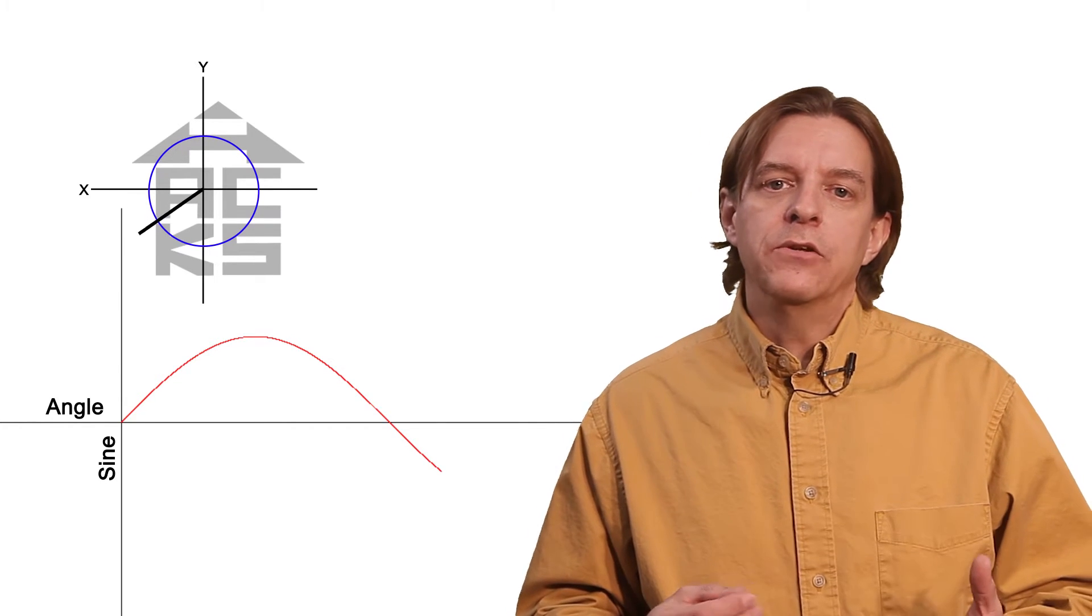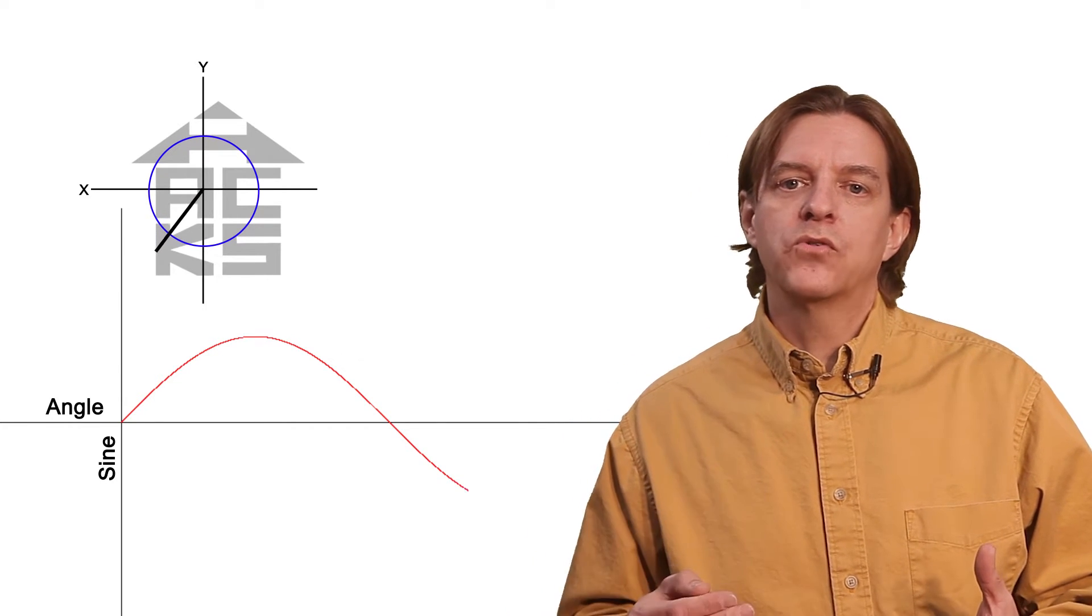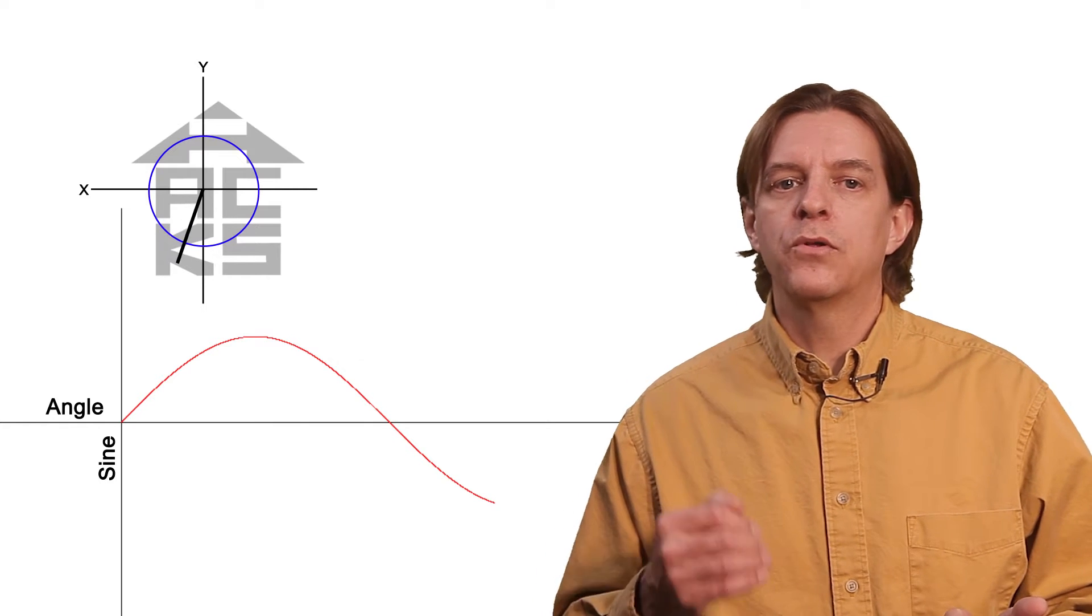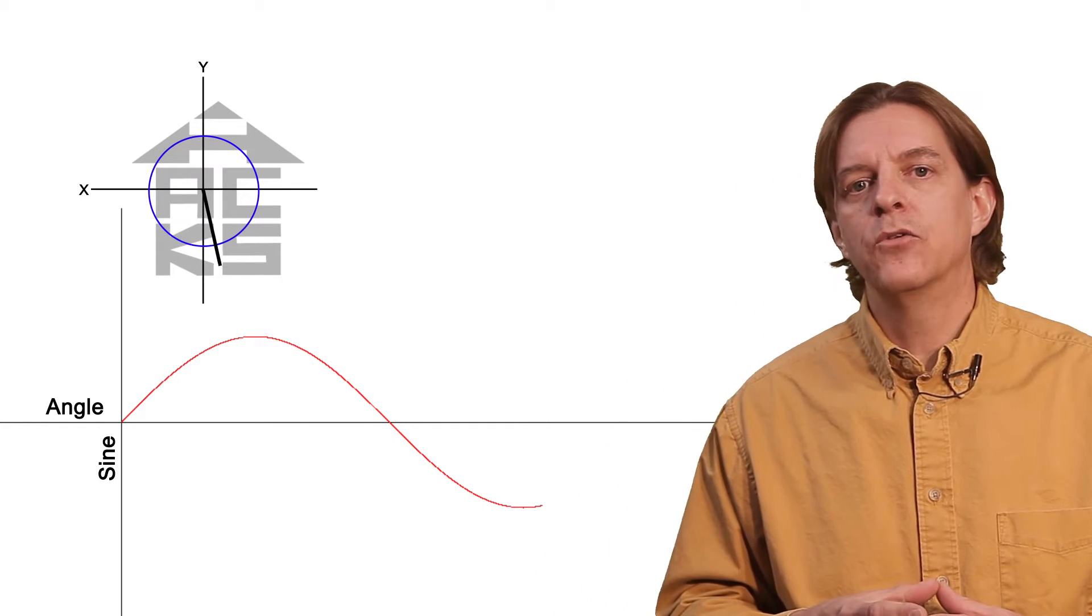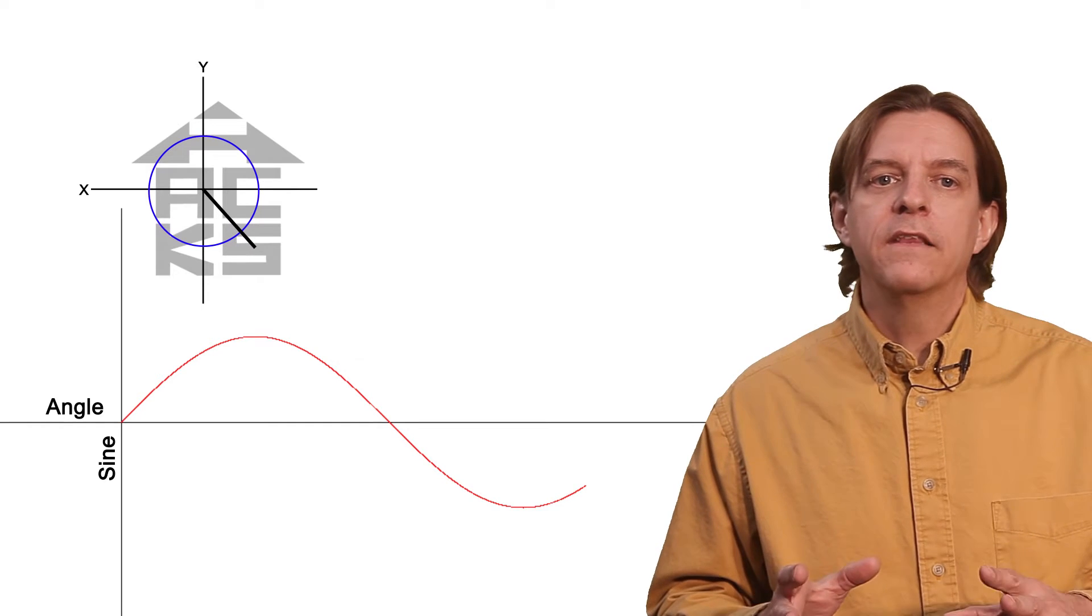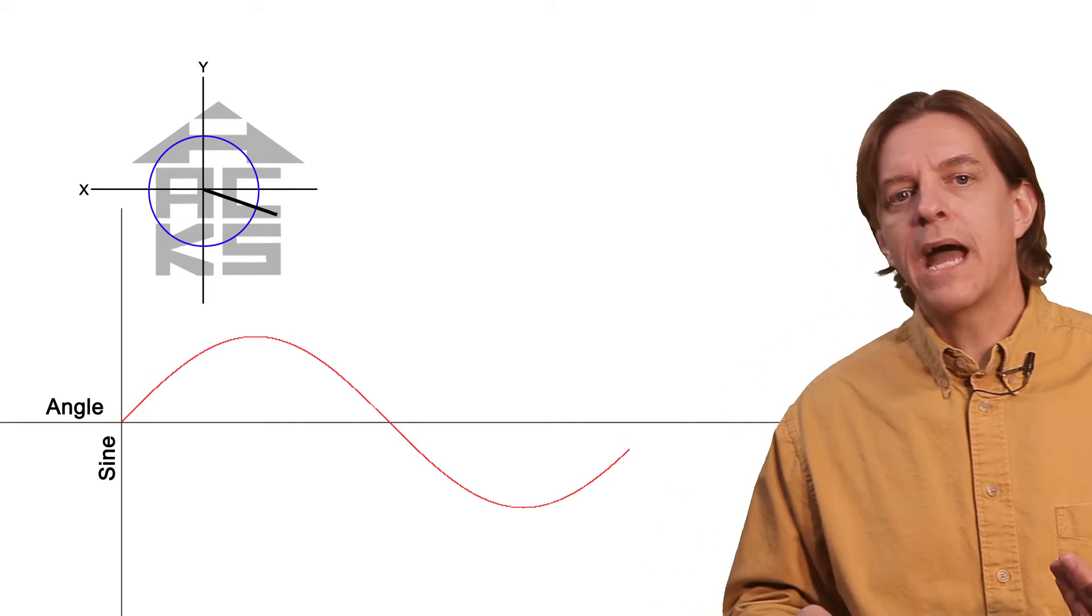As the angle continues to increase, the y-coordinate of our circle drops into negative values in the third quadrant until it reaches minus 1 at 270 degrees. Finally, in the fourth quadrant, we see y coming back up to 0.